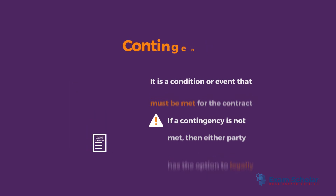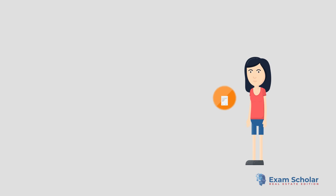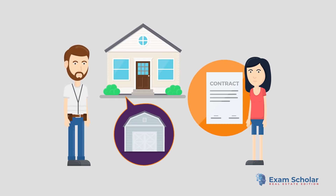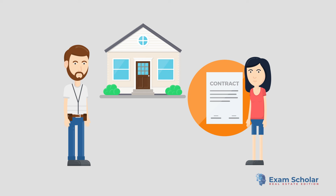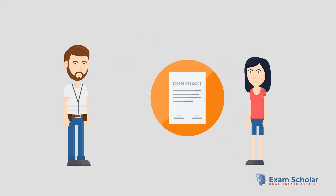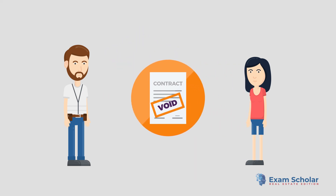Let's look at another example. Jessica has signed a contract to purchase a house with an attached shed. Unfortunately, the seller did not realize that the shed was both important to Jessica and a part of the real property when they signed the contract. Consequently, they dismantled the shed and moved it to their new property. This action has altered the state of the property, giving Jessica the legal right to void the contract.